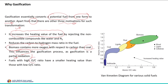The heat released during partial oxidation provides the thermal energy required for the gasification process. Fuels with a high O/C ratio have a smaller heating value than those with a low O/C ratio. The low O/C ratio material has a relatively higher heating value, whereas biomass has a relatively low high heating value compared to coal and anthracite, which have lower O/C ratios.